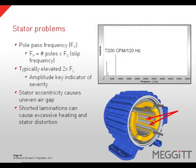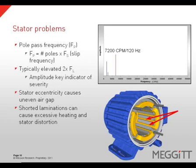Stator problems can manifest themselves in the vibration spectrum in several ways. The presence of pole pass frequency — which is the number of stator poles times the slip frequency — can indicate a problem with the stator. When a problem exists with the stator, there will typically be elevated levels of two-times line frequency, and the amplitude of this frequency can be a key indicator of severity. When a stator is eccentric, it will cause an uneven air gap, elevated levels of two-times line frequency, and hot spots on the stator. Shorted laminations can cause excessive heating and, ultimately, stator distortion.